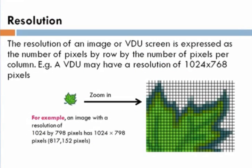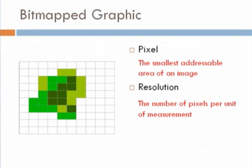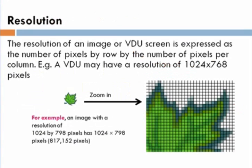You will find, for example, 1024 by 768 is a common resolution. So it's the number of pixels by row as opposed to the number of pixels per column. For example, your screen or VDU, visual display unit, might be this typical 1024 by 768. What this means is 1024 pixels across on the row and 768 down on the column. That's the definition of resolution. But the definition is the number of pixels per unit of measurement.